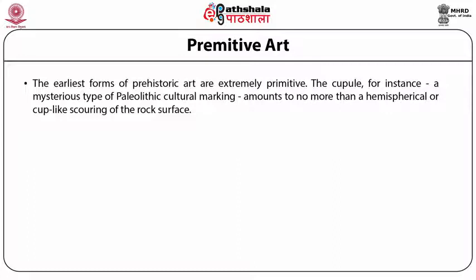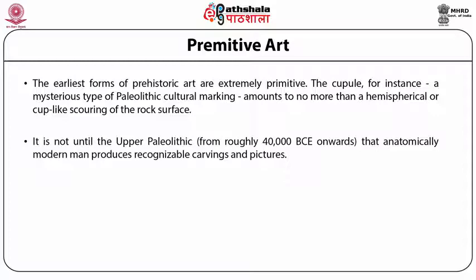The earliest forms of prehistoric art are extremely primitive. The cup, for instance, a mysterious type of Paleolithic culture making, amounts to no more than a hemispherical or cup-like scoring of the rock surface. The early sculptures known as the Venus of Tan-Tan and Berekhat Ram are such crude representations of humanoid shapes that some experts doubt whether they are works of art at all. It is not until the Upper Paleolithic that anatomically modern man produced recognizable carvings and pictures.